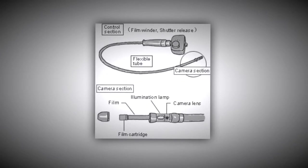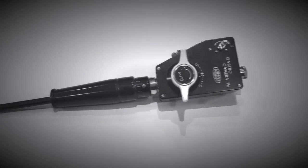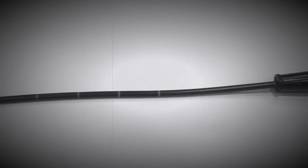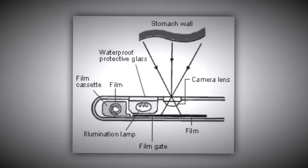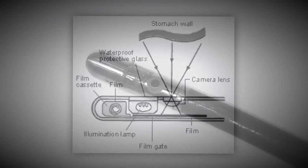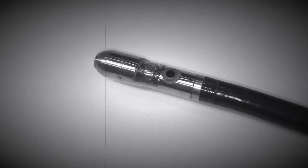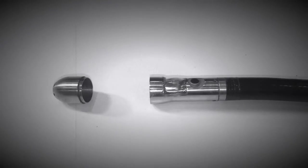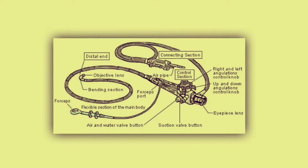The gastro camera in 1950: researchers unveiled the first prototype. The images were captured on black and white film by photo flashing miniature light bulbs in vitro. The film had to be wound up by pulling a wire in the endoscope.